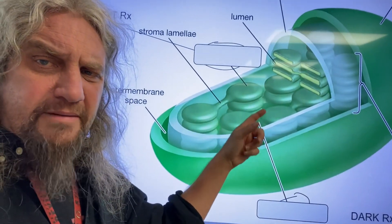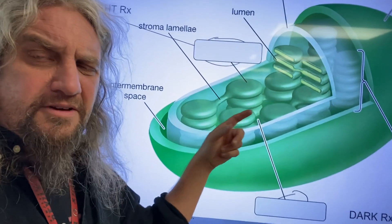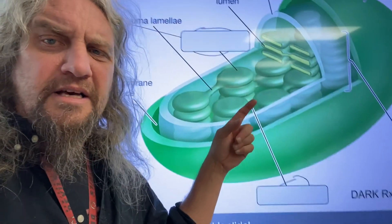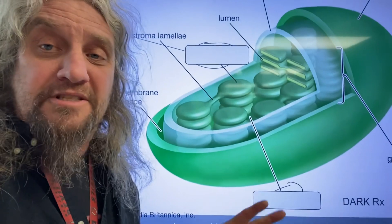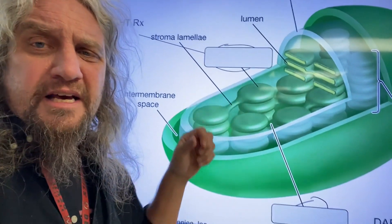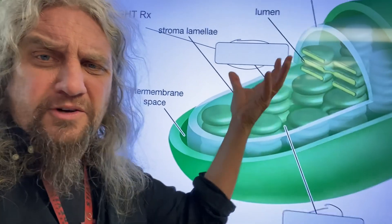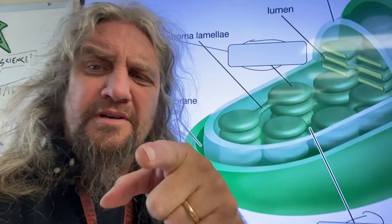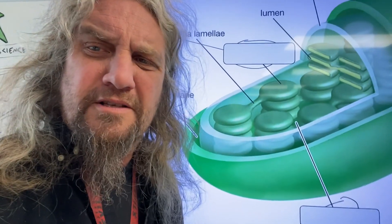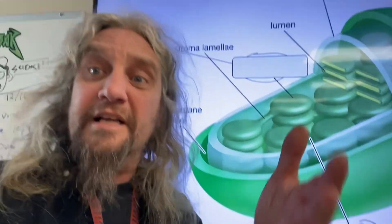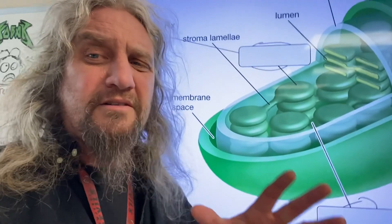These little membrane-bound pancakes inside the chloroplast are called thylakoids. That's where the light reaction of photosynthesis happens. Photons of light hammer those thylakoids, and in response, the thylakoids hold up molecules of water that get blasted apart. The tissue that delivers water to the leaves and ultimately to the thylakoids is called xylem — it's a great Scrabble word.